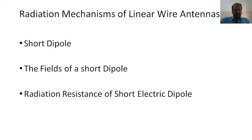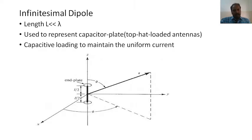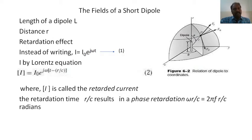First, we are going to see the radiation mechanism of the linear wire antenna. In the linear wire antenna, we have a short dipole, and we find the field components of the short dipole — electric and magnetic field components — and then find the radiation mechanism for the short electric dipole. By placing the dipole of length L, which should be less than the wavelength lambda, on a spherical coordinate system, we will find the field components. This uses the retarded current I-naught times e to the power j-omega-t minus r-by-c, where r-by-c is the retarded time.